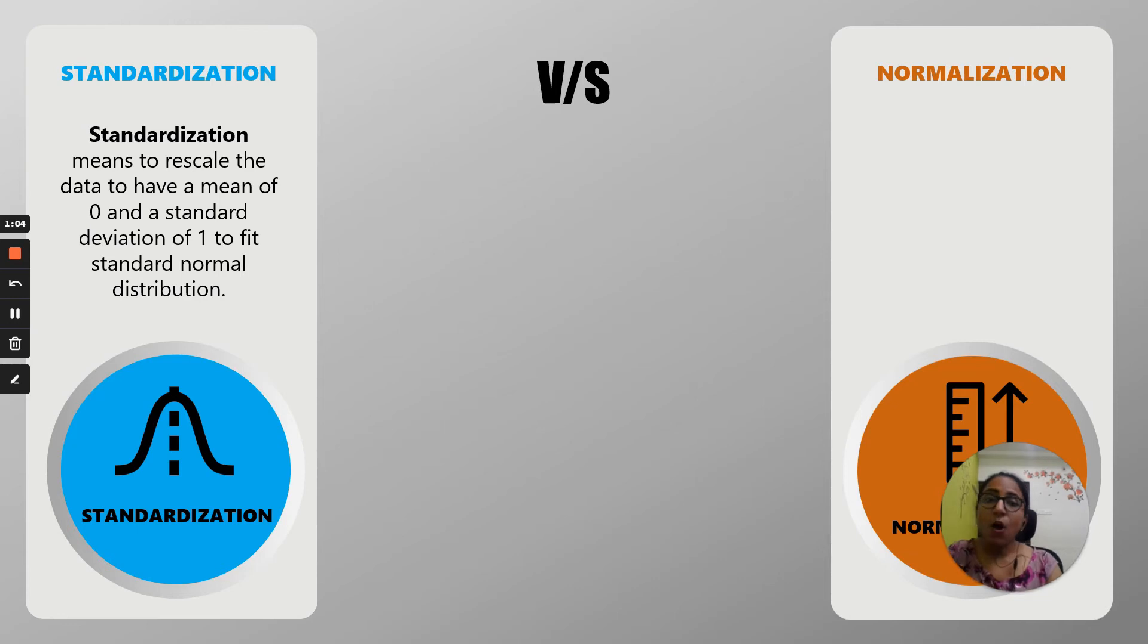Although people confuse standardization with normalization, that's the main difference. Then comes normalization. Normalization means to rescale the data into a range of zero to one. Different types of standardization techniques are there and normalization also.